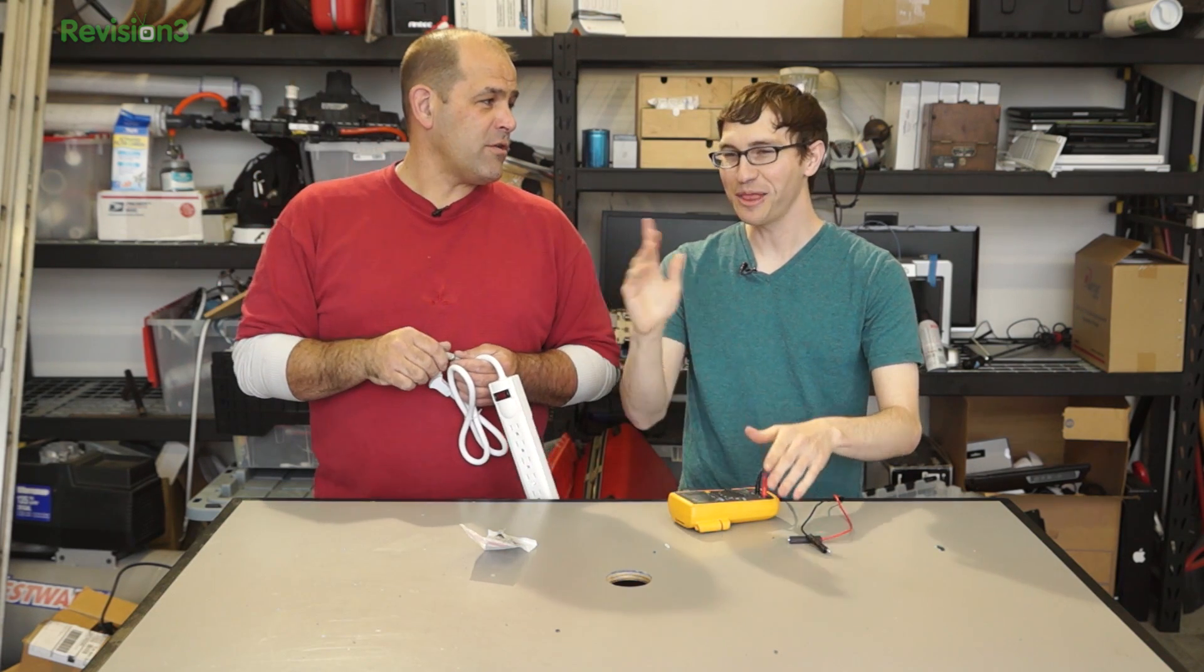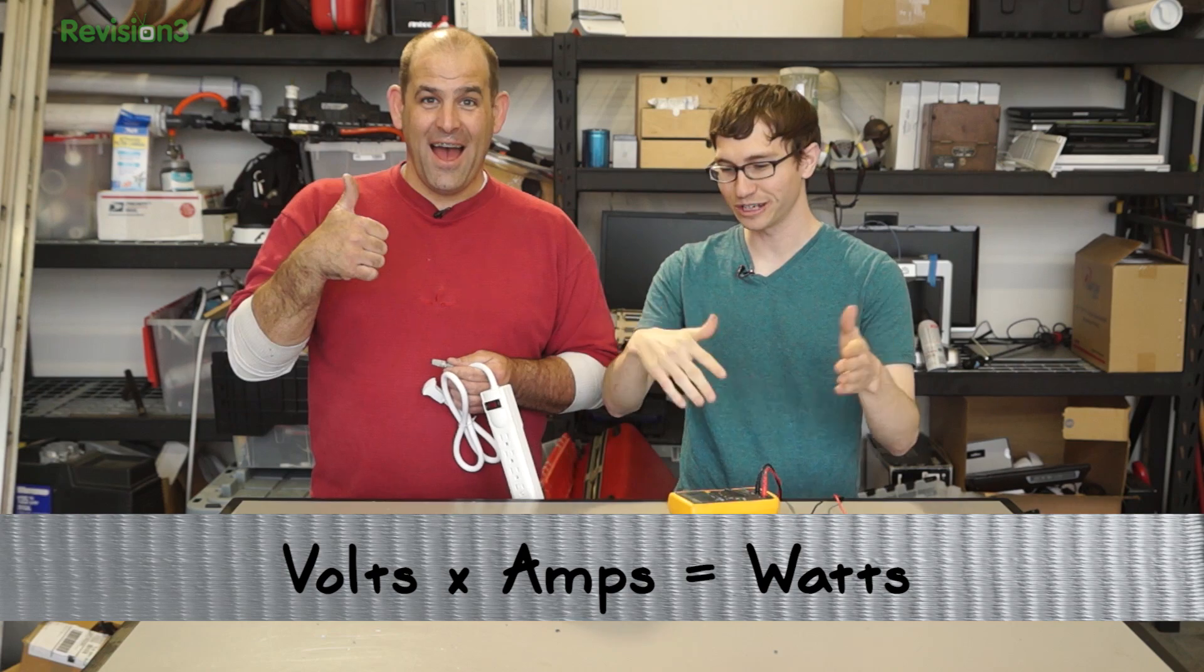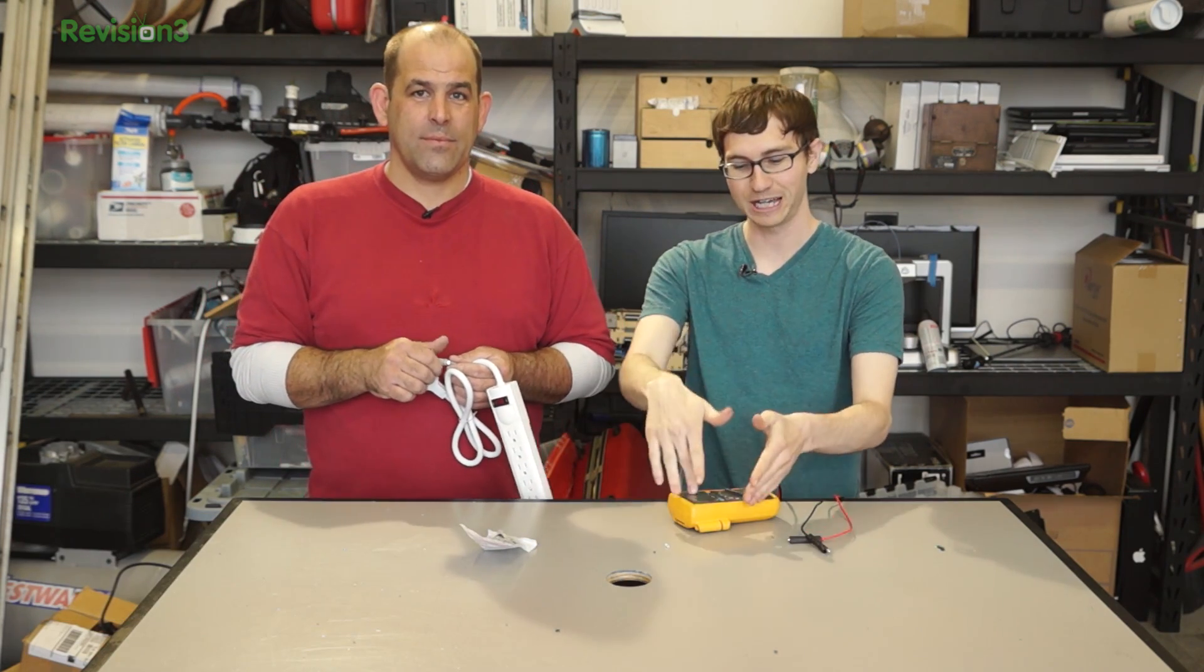And then you'll use the power equation to figure out how many watts it's actually consuming. What is the power equation? The power equation is volts times amps equals watts. So we know that we're getting 120 volts. So 120 volts times however many amps we're reading, it'll tell us how many watts that device is pulling.